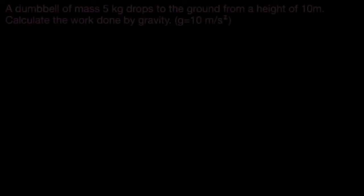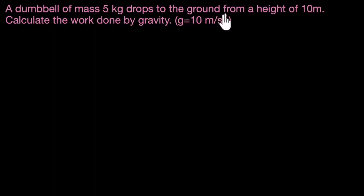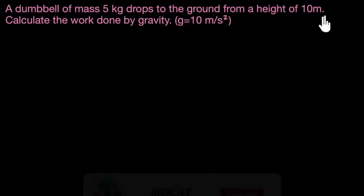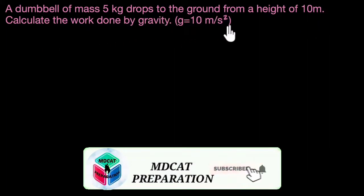Let's calculate work done when things are dropped or lifted. Let's solve two problems on this. Here's the first one: a dumbbell of mass five kilogram drops to the ground from a height of 10 meters. Calculate the work done by gravity. We're given g is 10 meters per second squared.